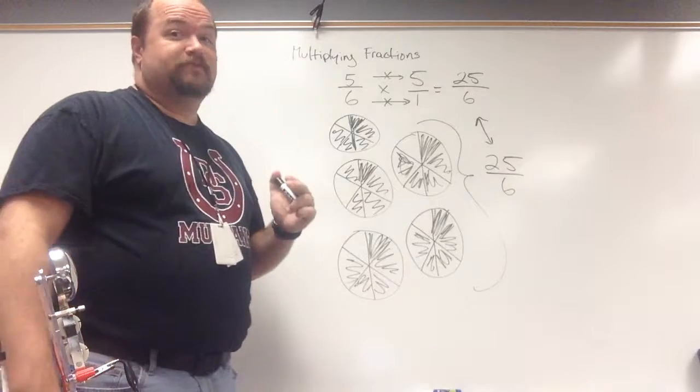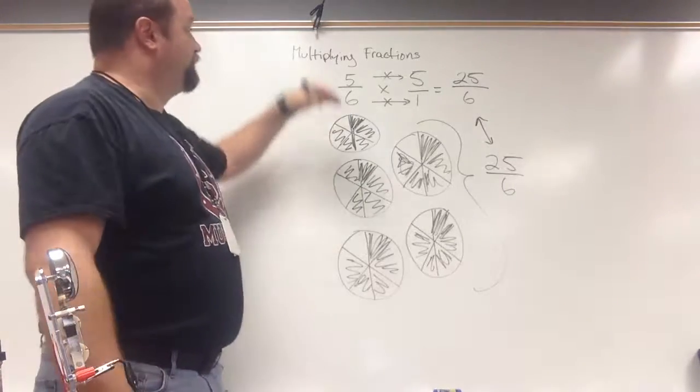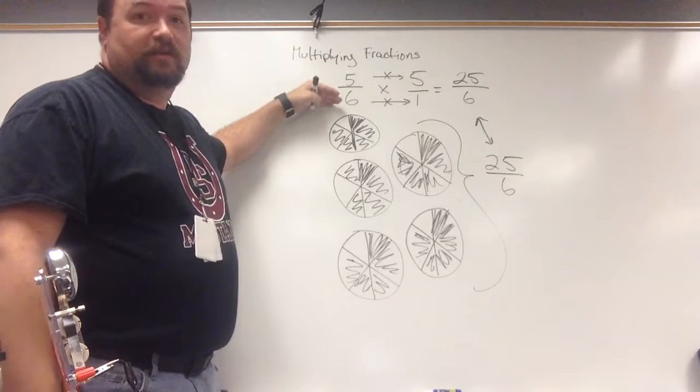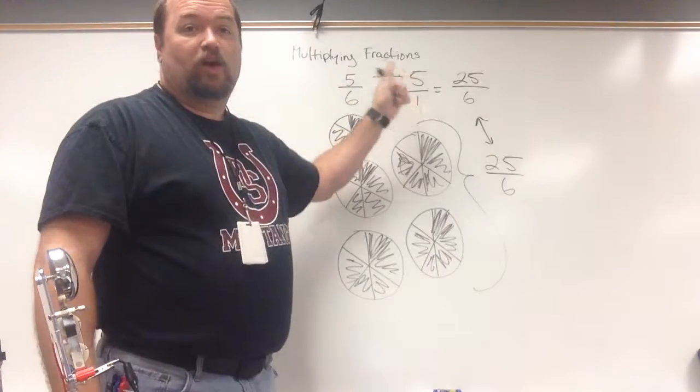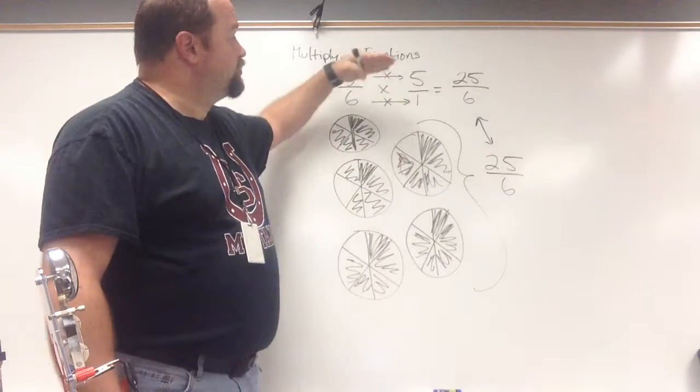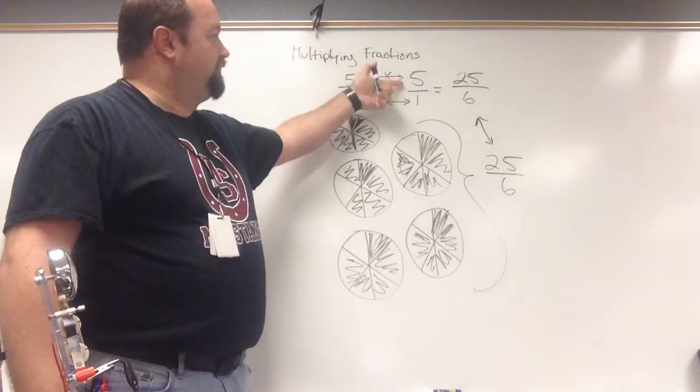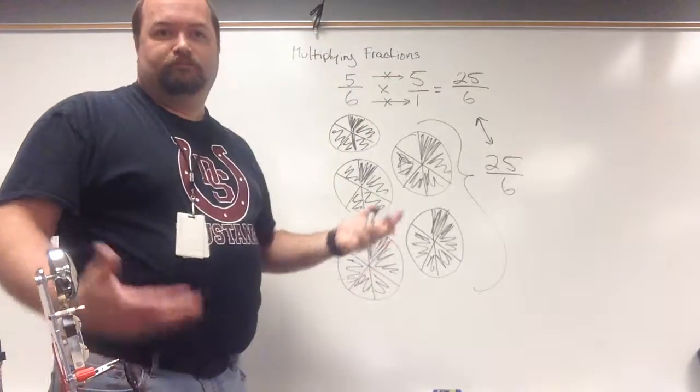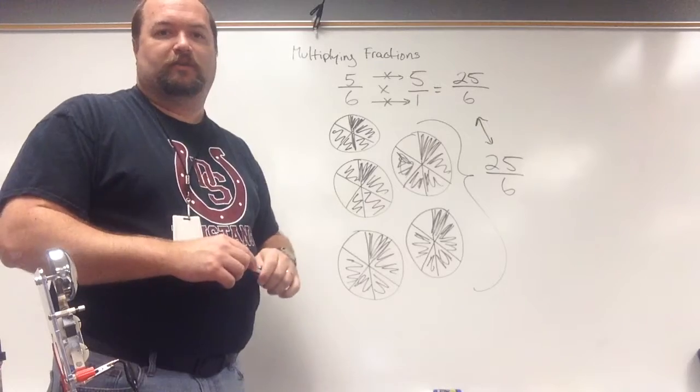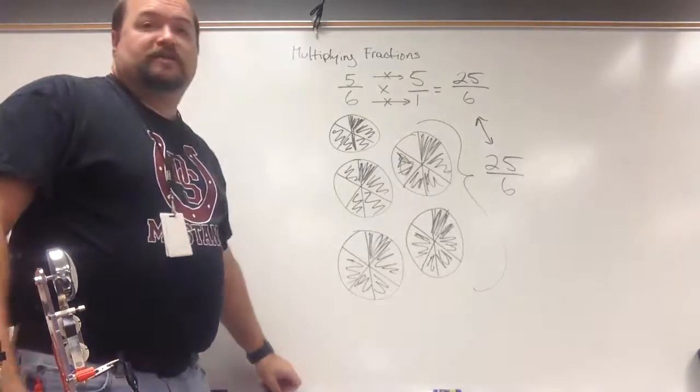All right? Again, guys, super easy process. Multiplying numerator to numerator, denominator to denominator. If you have a whole number, remember, you just do the fraction bar and put a 1 underneath it. Because it's just 5 wholes, so that's 5 over 1. Okay, and that's what you'll be doing on your assignment. All right, you guys have a great day. Thank you.